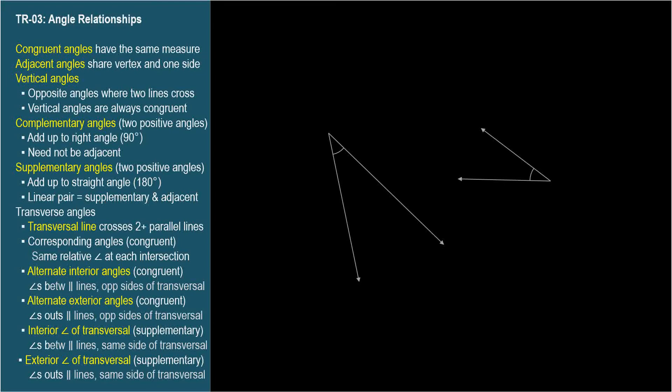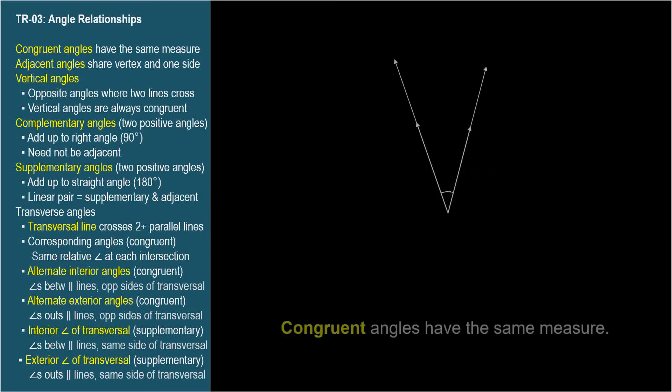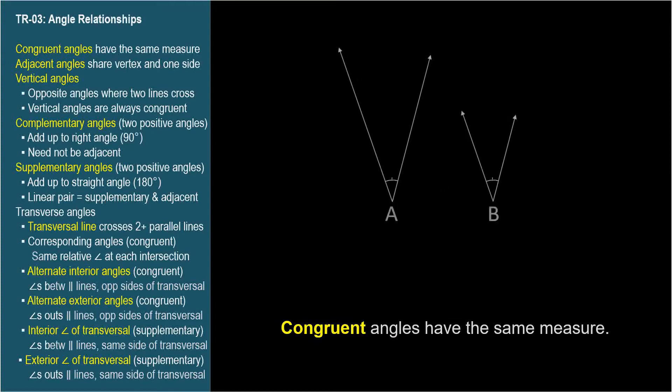Congruent angles are angles having the same measure. This is the symbol for congruent — an equal sign with a squiggle on top. This expression would be read aloud as: angle A is congruent to angle B.